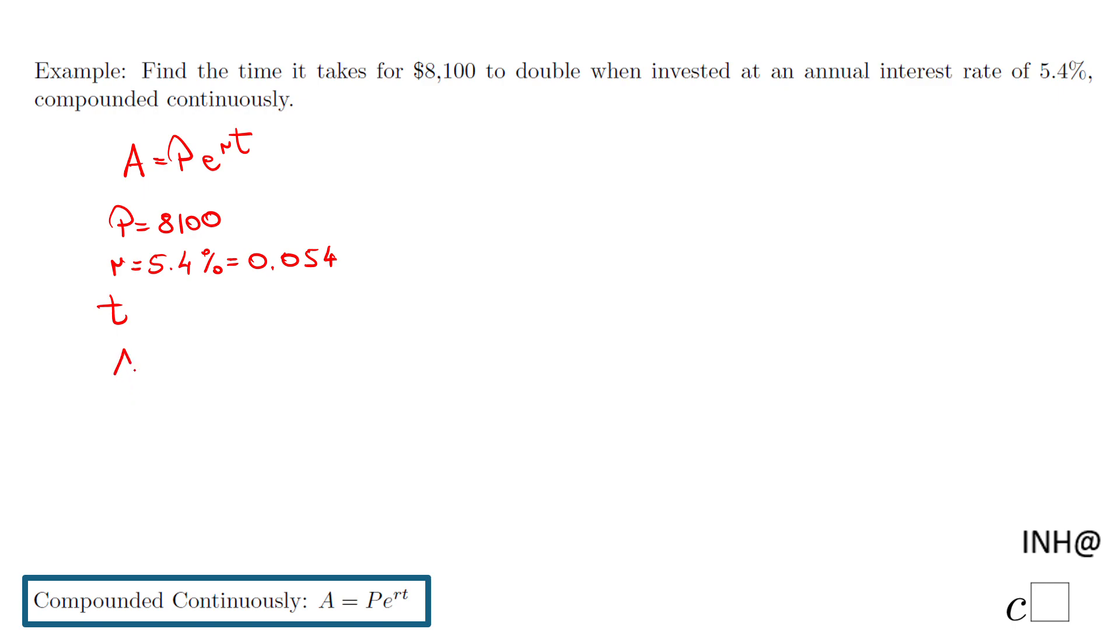A is the money we want to have at the end of that period of time. It's double the $8,100: two times $8,100, which will be $16,200. So now we have everything we need to go back to our formula.